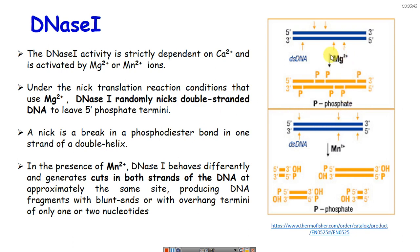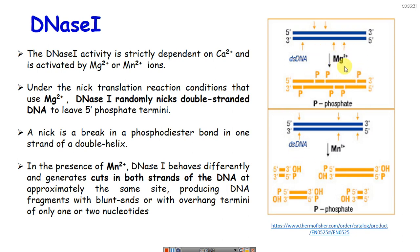In the presence of magnesium ions, DNase I makes nicks randomly in both strands. When manganese is used, it breaks the phosphodiester bond in both strands at approximately the same time, producing double-strand breaks with blunt ends or overhangs of only one or two nucleotides. So it is important to choose the right metal ion when carrying out nick translation.